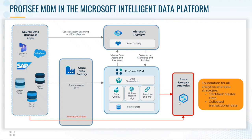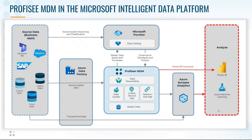So now we've got a foundation for all subsequent analytics and data strategies, whether they're data fabric, data mesh, use of machine learning, or whatever it is — we've now got the root foundation. We've got a combination of certified master data as well as all the collected transactional data that we can now use to analyze in whatever way we want. Power BI is a typical toolset for this. Power BI has a dedicated Prophecy connector, so you can directly access master data within Prophecy in Power BI. But more importantly, you can access all of the information now in Synapse — which includes the master data and the transactional information — either in Power BI, Azure Machine Learning, or any other analytic system you would want.